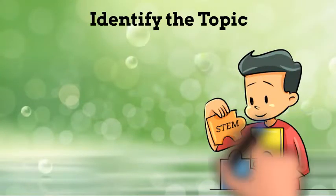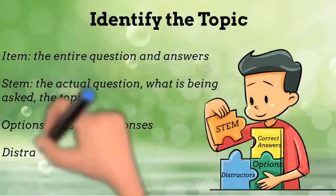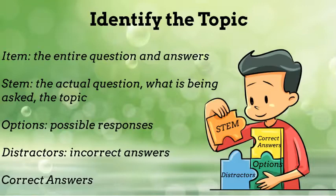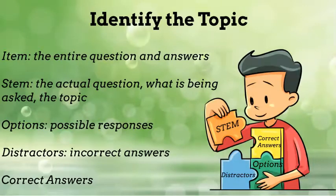Step one is to identify the topic. Every test question or item has a number of parts. We refer to the entire question and answer group as an item. The stem is the part of the question that tells you what is actually being asked. The options are all of the listed answers. In multiple response items, these are true-false statements. Within the options, we have distractors, which are the wrong answers, and of course the correct answers. When we identify the topic, we decide what the question is actually asking so we can systematically rule in or rule out answers. We can't answer a question if we don't know what it's asking, and that's why this is the first step.